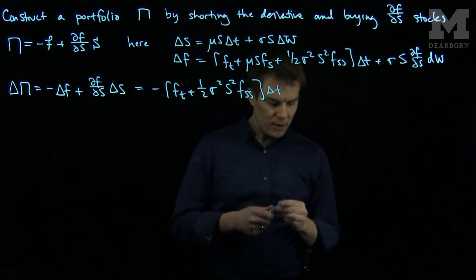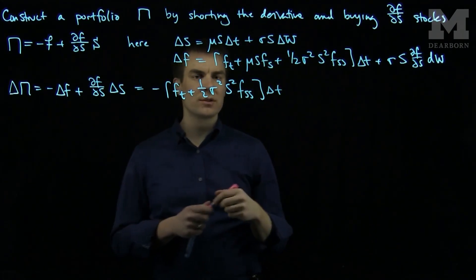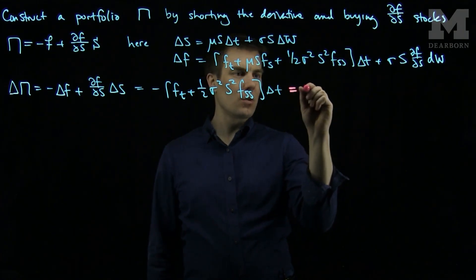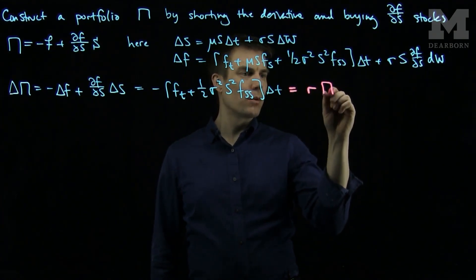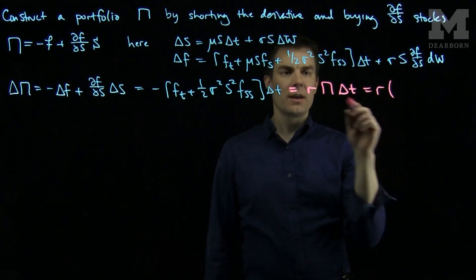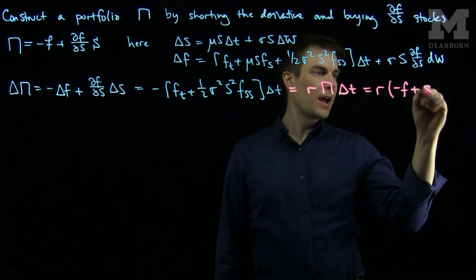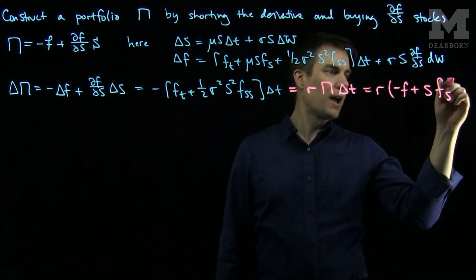Since this does not involve any random elements, since the randomness will cancel out by the assumptions, we see that this has to be equal to r times the portfolio Δt, which is r, and then I will have a minus f and a plus sfs.